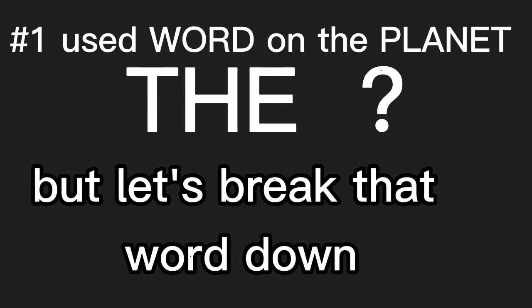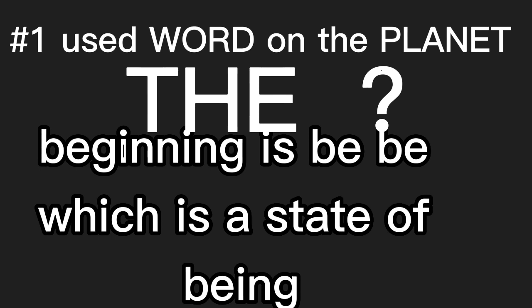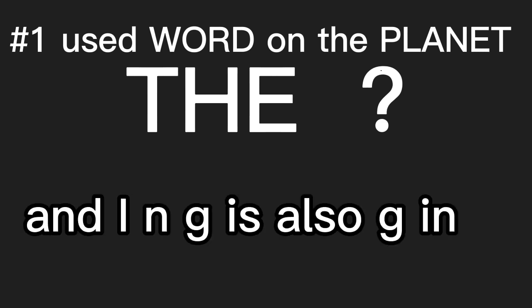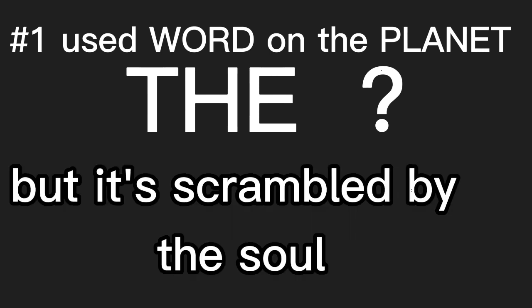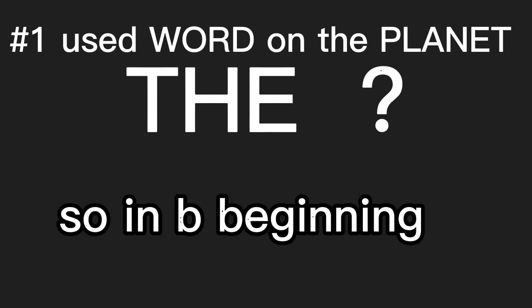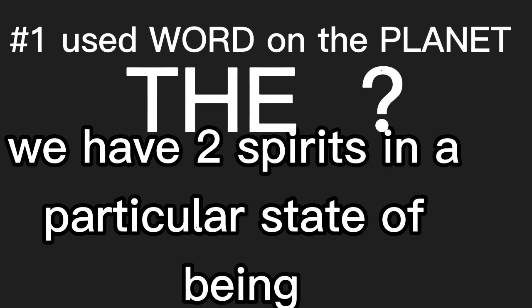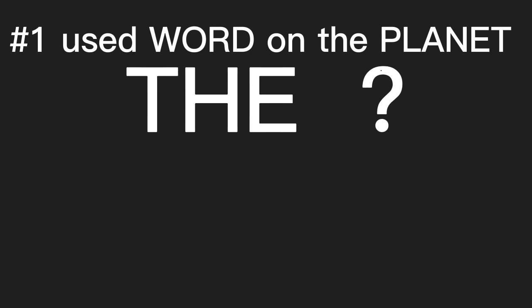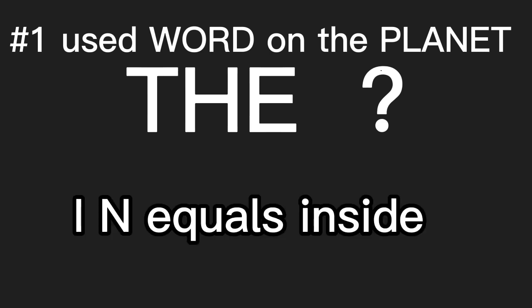Beginning is B-E, which is a state of being. G-I-N, gen, which is a spirit. And I-N-G is also G-I-N, but it's scrambled by the soul. And gen is another spirit. So in the beginning, we have two spirits in a particular state of being — not human being yet, but a state of being. N-I-N equals inside.